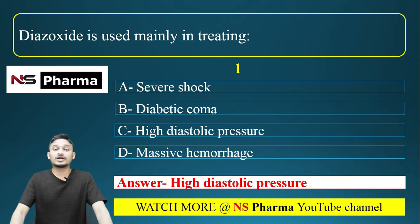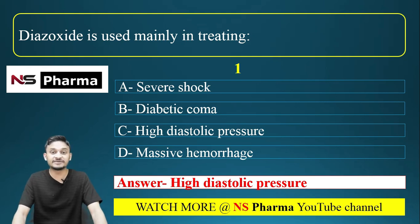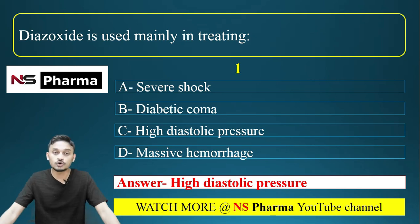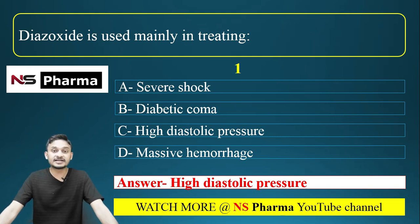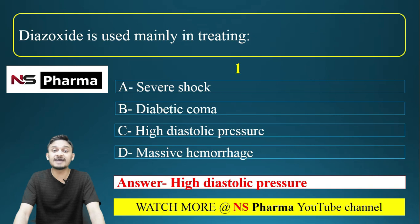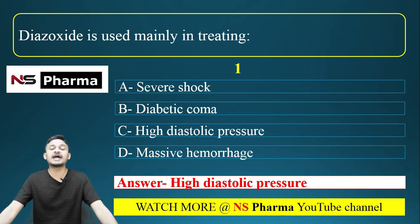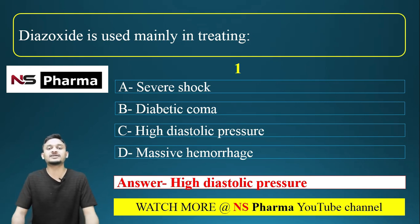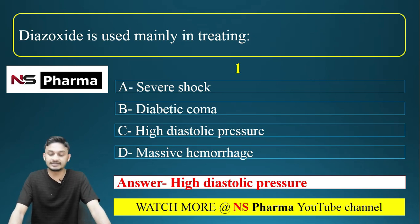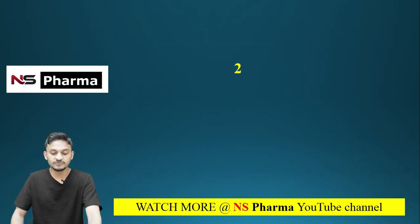Diazoxide is a vasodilator which is used as an antihypertensive drug. The main adverse effect of diazoxide is hyperglycemia — it will increase the sugar level in the blood, because diazoxide inhibits or suppresses the release of insulin, that's why it causes hyperglycemia.